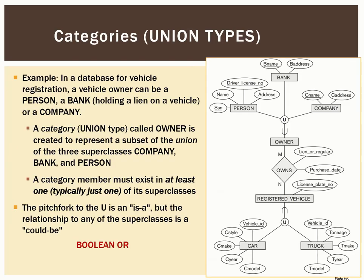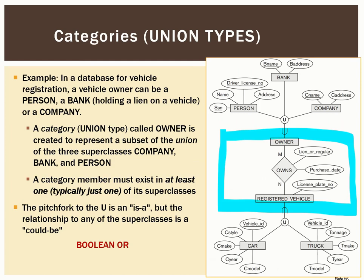Now we'll explore the relationship between owners and registered vehicles. An owner who owns registered vehicles has different attributes, and owner is a subclass — we can see that with the pitchfork — but it's a subclass of a U. The U stands for union, meaning it will have multiple superclasses. The owner of a vehicle could be a person, or it could be a bank, or it could be a company. Like our previous example, owner the subclass has three superclasses: person, bank, and company. Previously the engineering manager also had three superclasses: engineer, manager, and salaried employee. But there's a big difference.